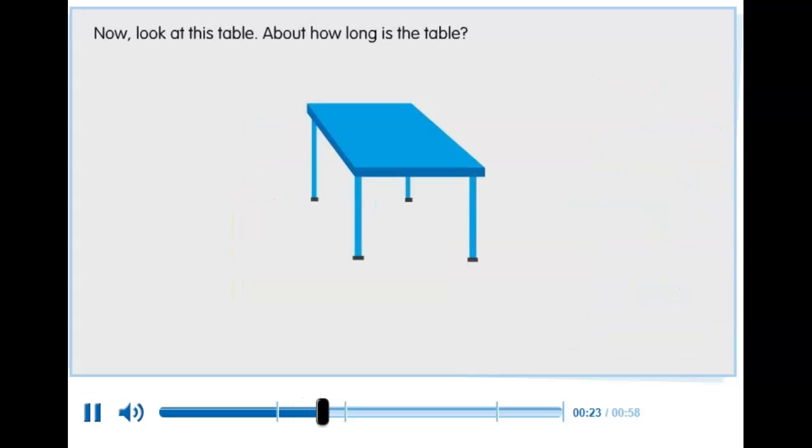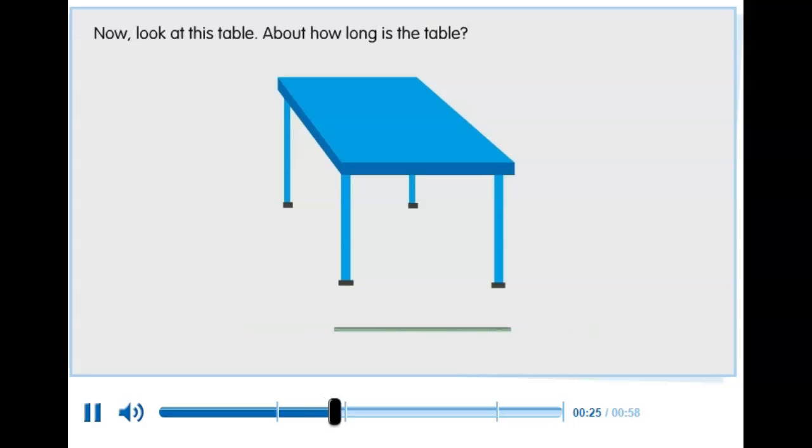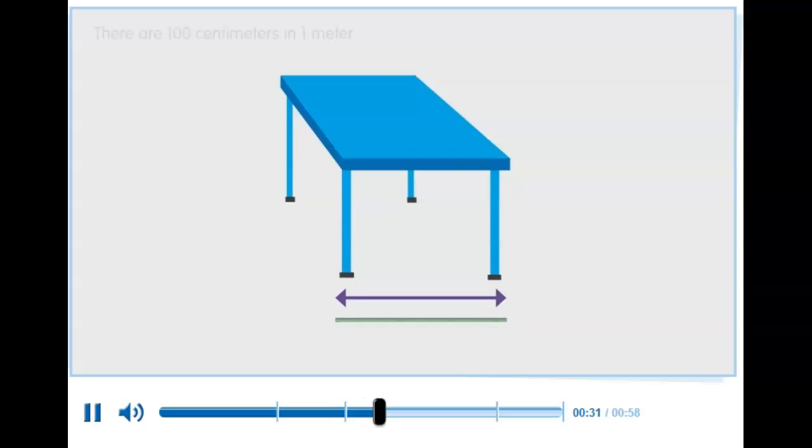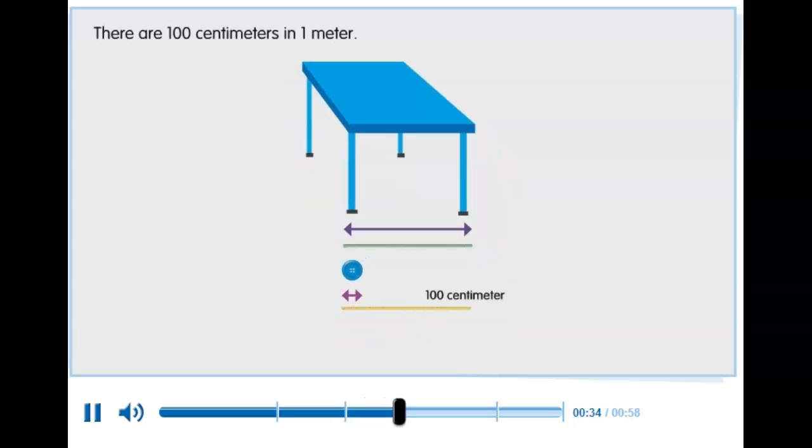Now look at this table. About how long is the table? The table is about one meter long. There are 100 centimeters in one meter.